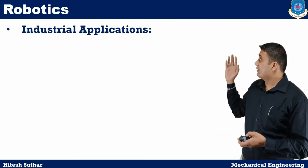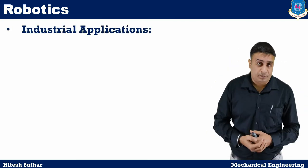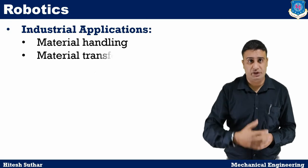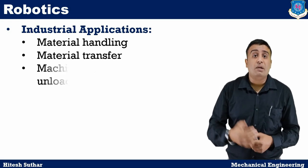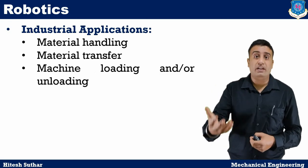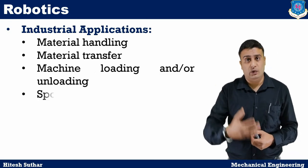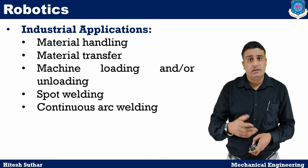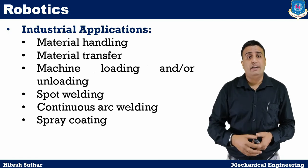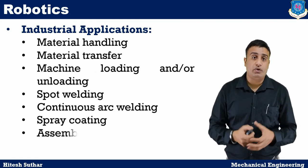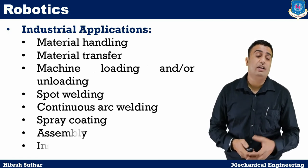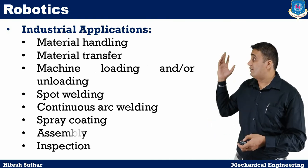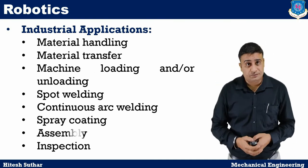Now moving on to industrial applications, robots are used in material handling to transfer material, machine loading and unloading, spot welding, continuous arc welding, spray coating, assembly, inspection, etc. These are all the industrial applications.